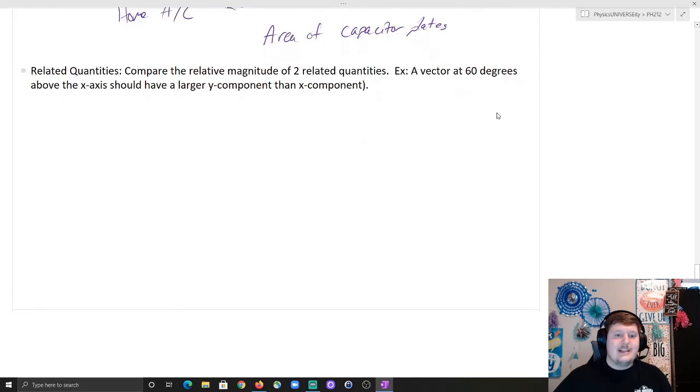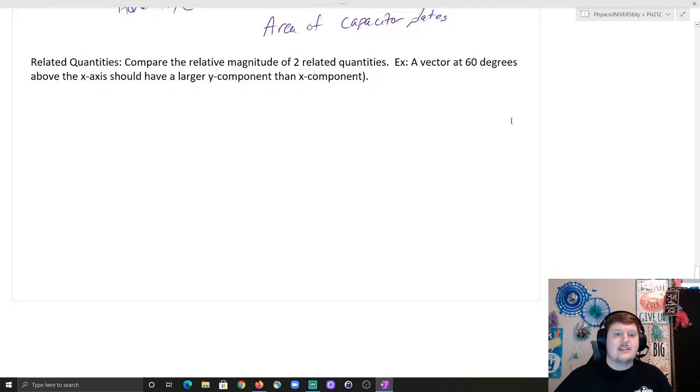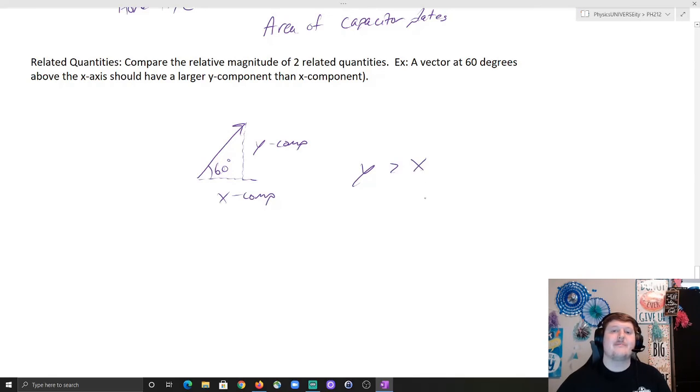And then the last one is relative quantities. So, compare the relative magnitude of two related quantities. Specifically, the best example we have is vectors at certain degrees having x and y components. So, if I know that I have a vector this way, and say that value is 60 degrees, I now have a y component and an x component. I would expect my y component to be bigger than my x component, because it's 60 degrees up. So, that y component should be bigger.